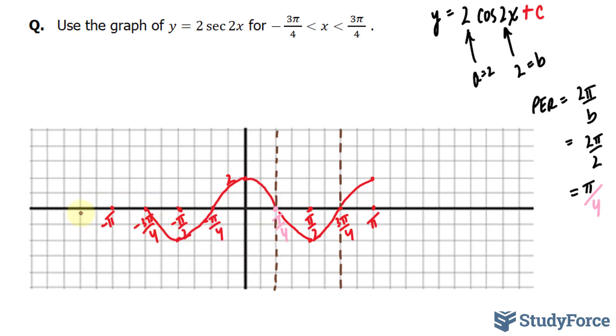Everything after this, everything to the left of this point, doesn't matter because that's outside of our intervals. We'll have another asymptote here and another one here.